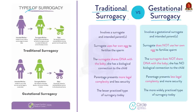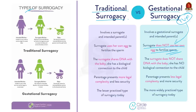In gestational surrogacy, an embryo is created through in vitro fertilization, which is IVF — the process in which mature eggs are collected from ovaries and fertilized by sperm in a lab. The egg of the surrogate mother is not used in any case; the eggs and sperm of the intended couple or donor are used to create the embryo. This embryo is then implanted into the uterus of the surrogate mother, who carries and delivers the baby. The child is not biologically related to the surrogate mother, who is referred to as just a gestational carrier.